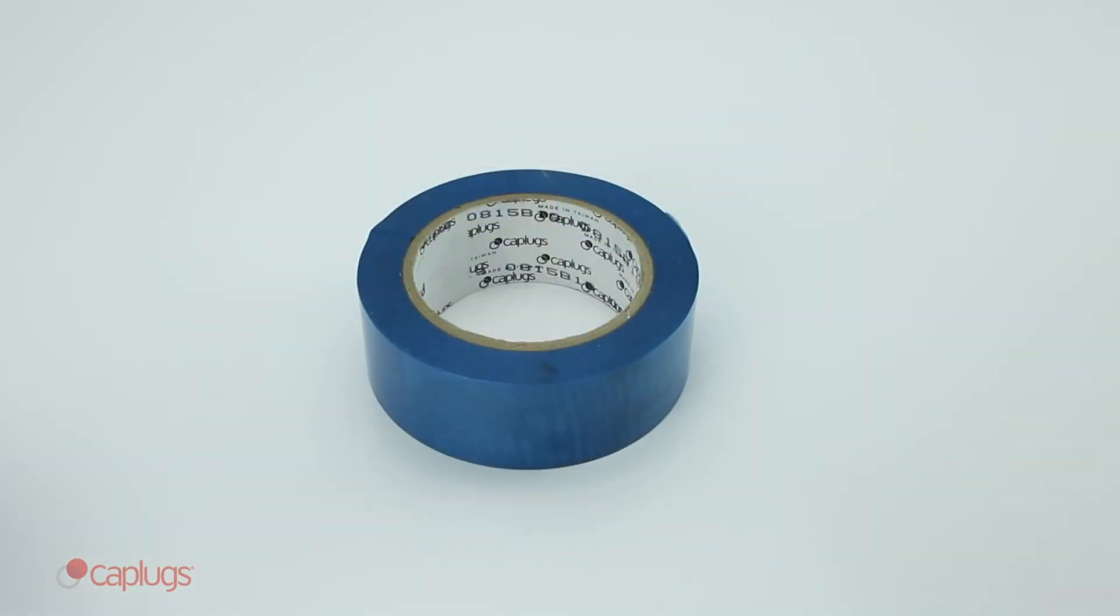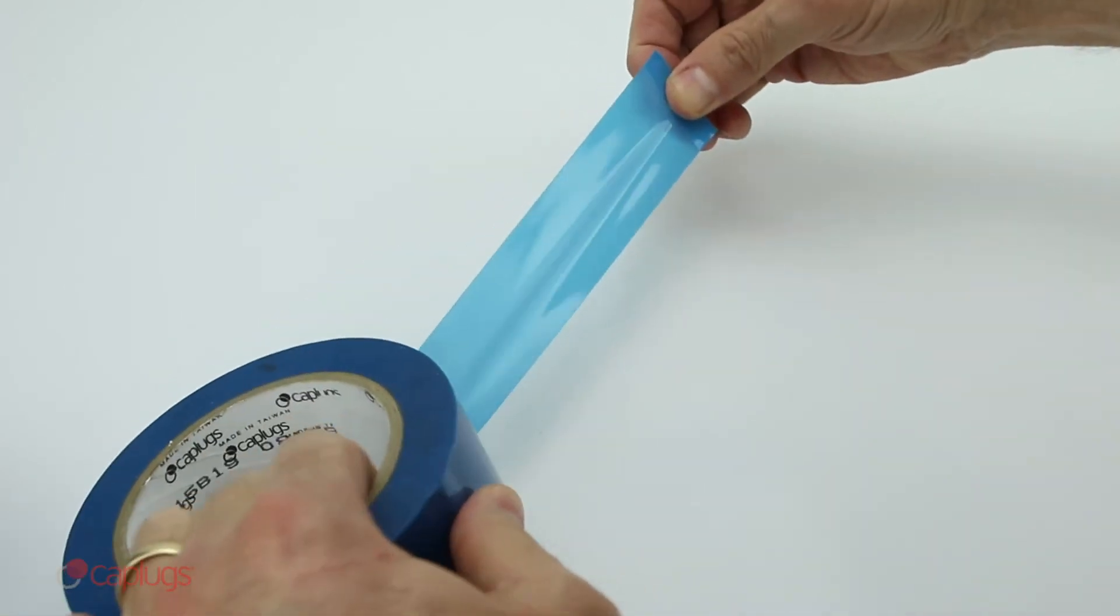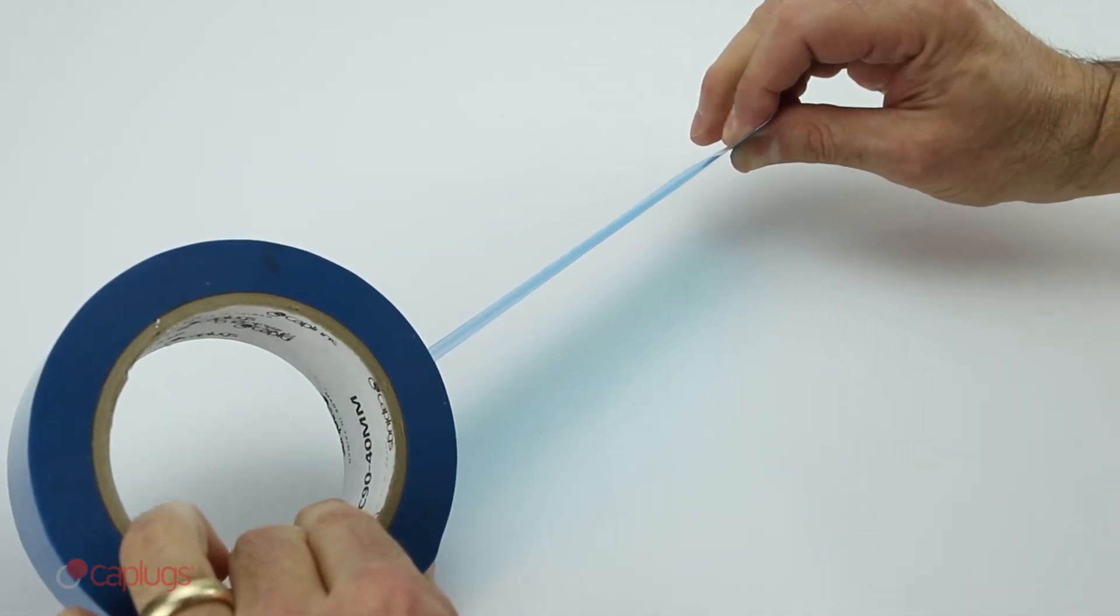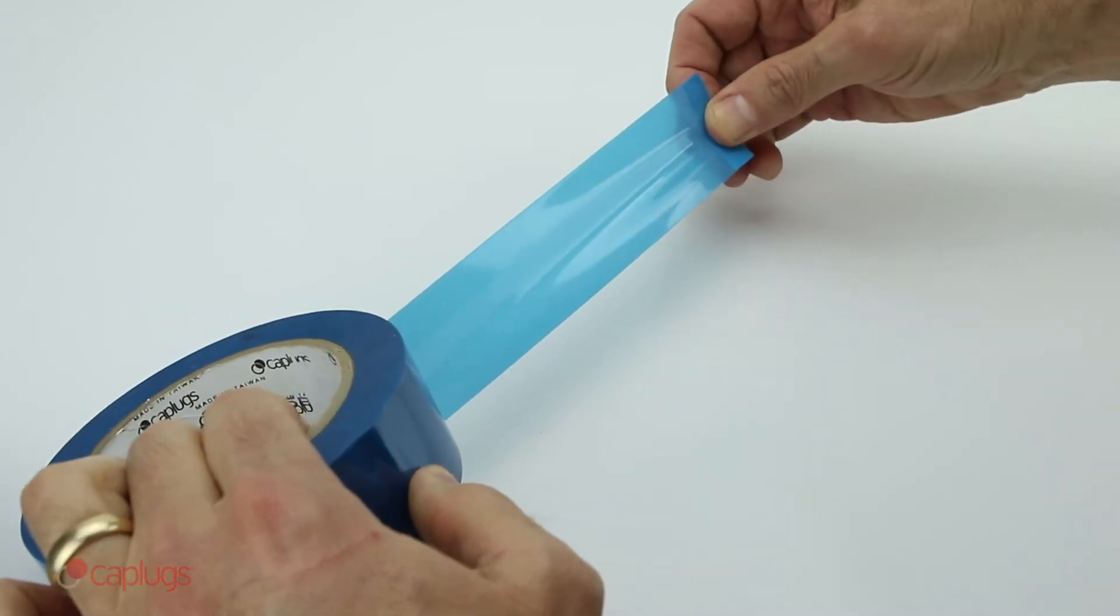PC90-SH is a 1 mil polyester tape with a 2 mil silicone adhesive. The thinner design of the tape makes it great for use on curved surfaces.